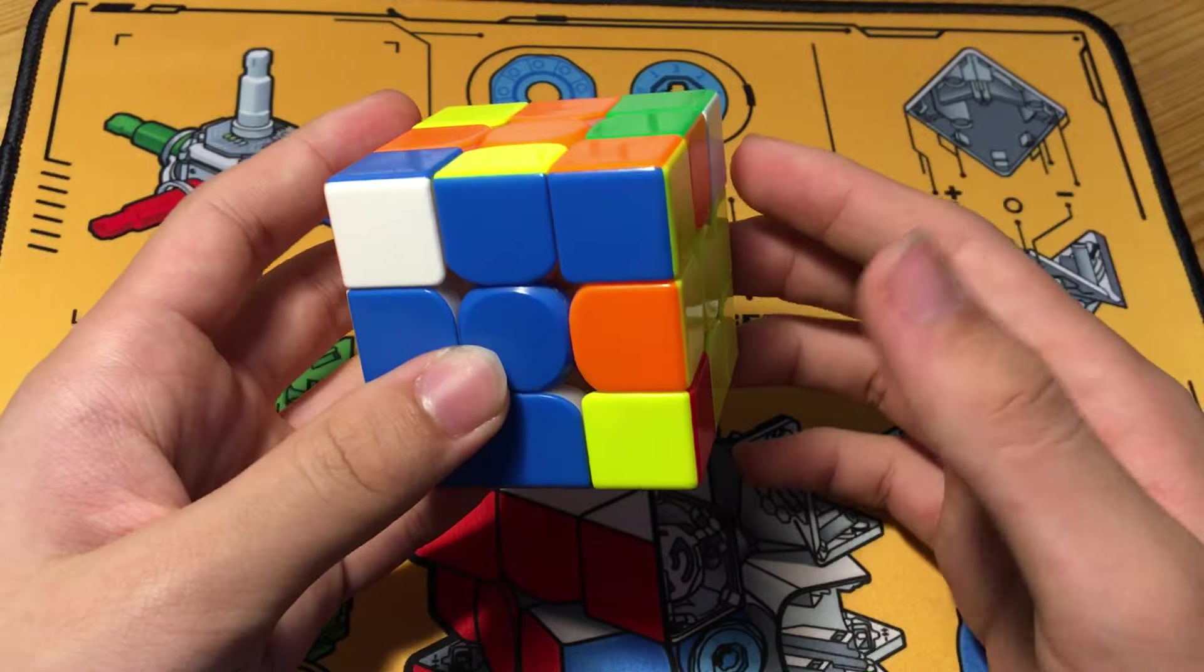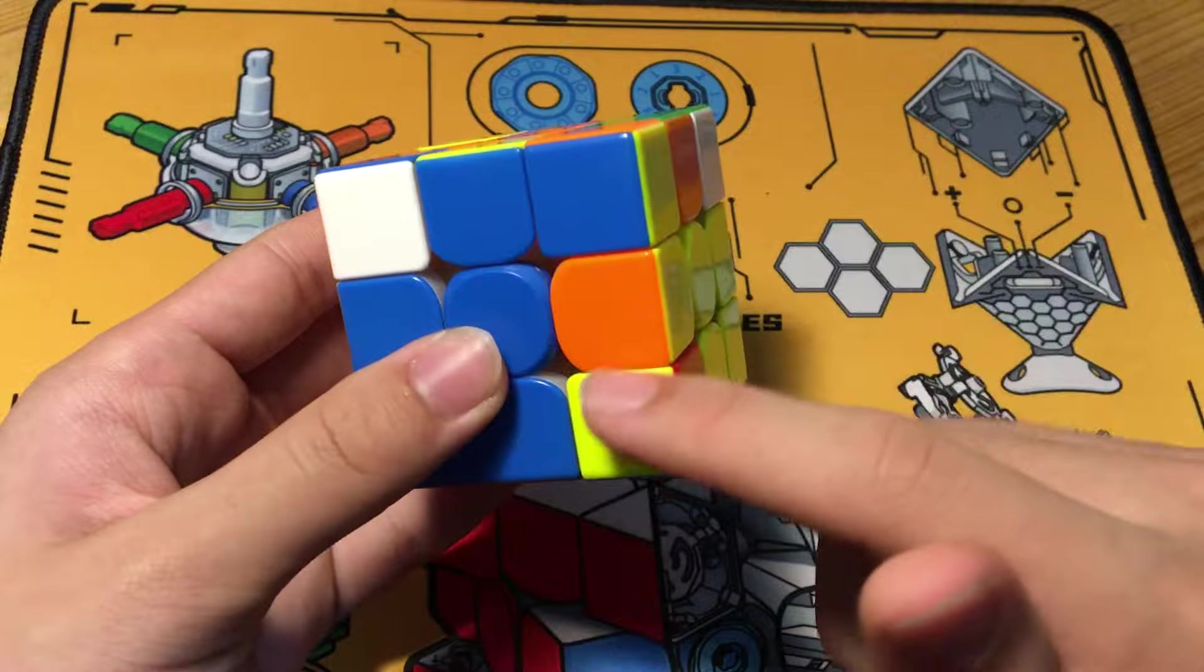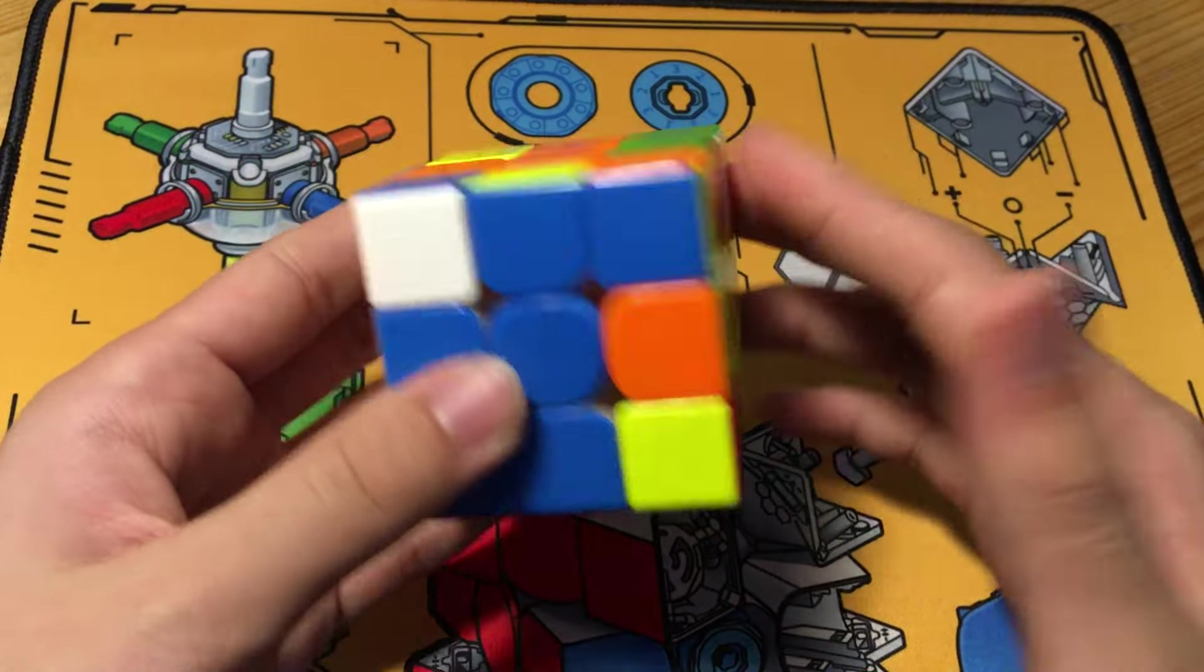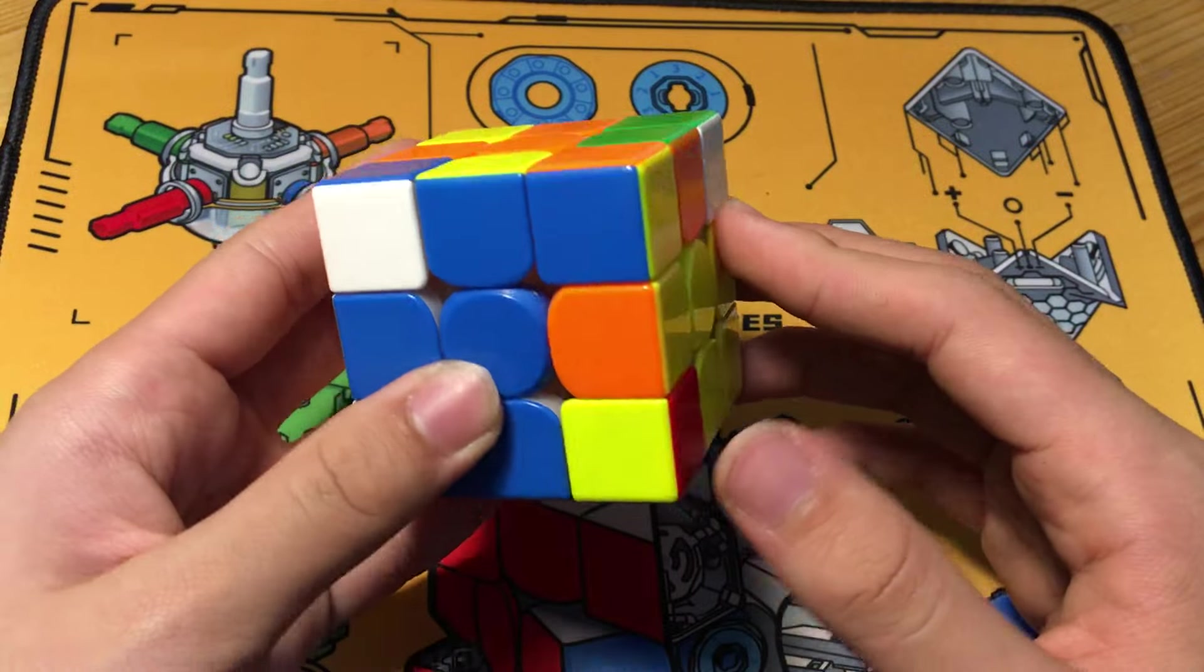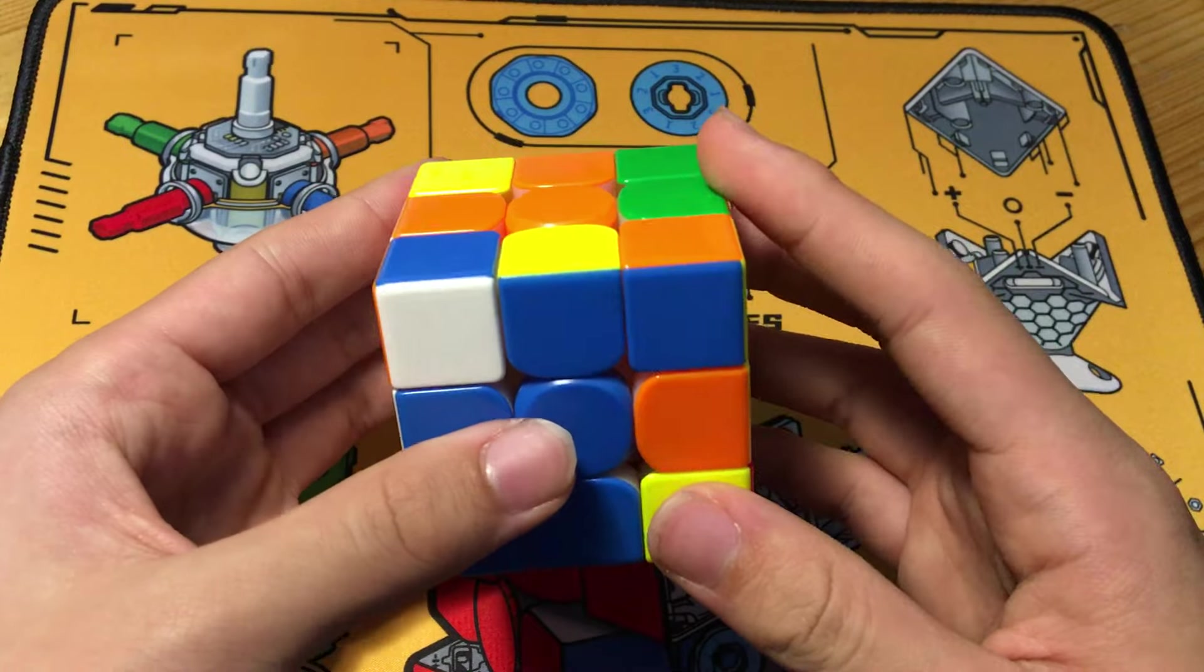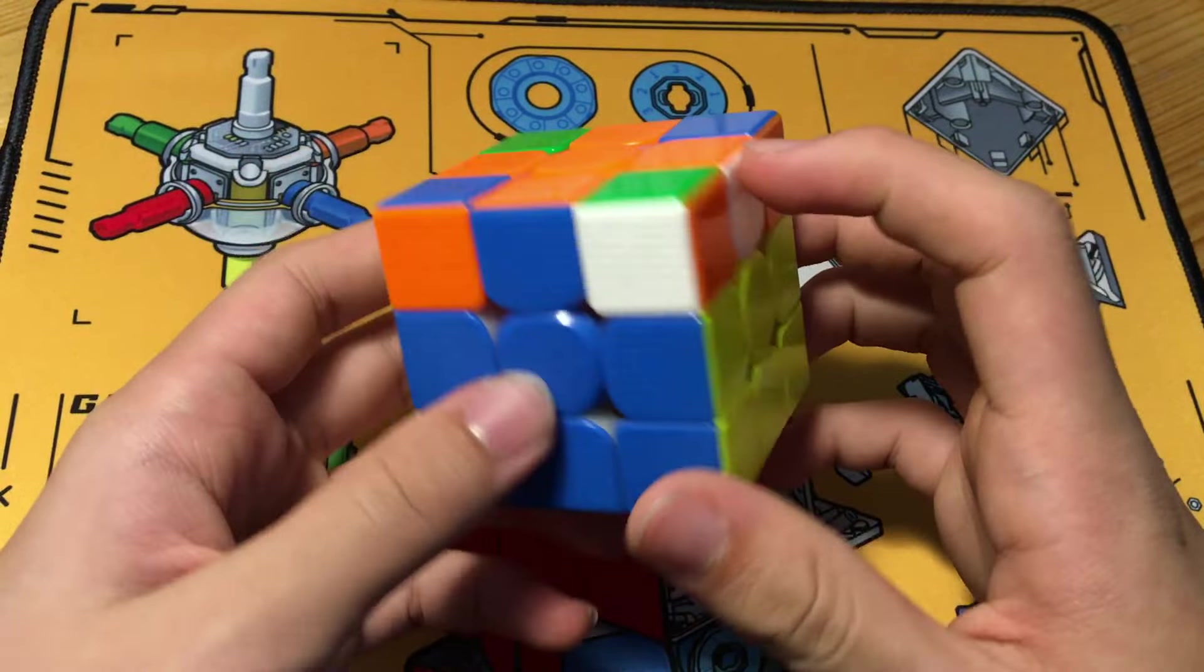And now, Timon does what is known as a ZBLS. So, basically, solving the last pair and orienting the edges at the top to give you a ZBLL. And here, Timon does use the full ZB method. Solving ZBLS, like so, a very easy ZBLS, for that matter.